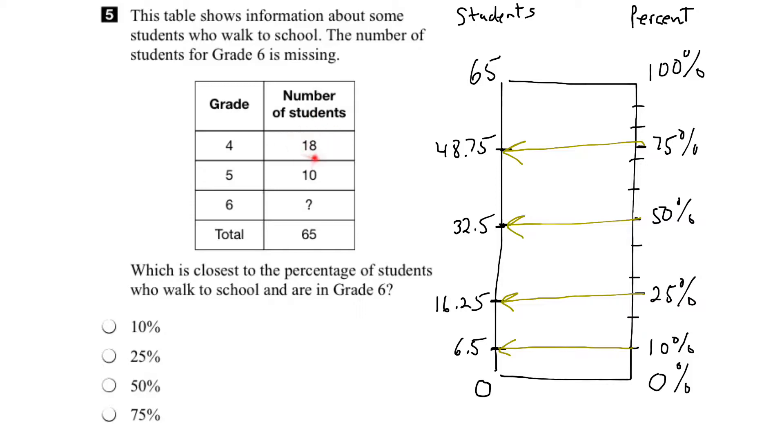We know that 18 for the grade 4 students plus 10 for grade 5 plus the number in grade 6 would equal the total. So we can go here and go 18 plus 10 plus the number of grade 6 students would equal 65. Now we want this equation to balance. So let's start. We can add 18 and 10 to get 28 plus the question mark. The grade 6 students equals 65.